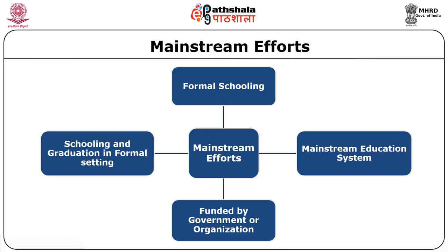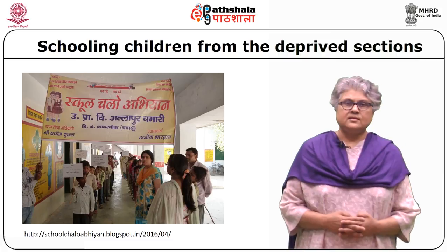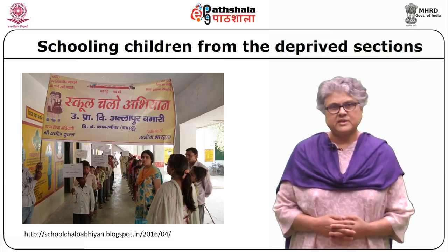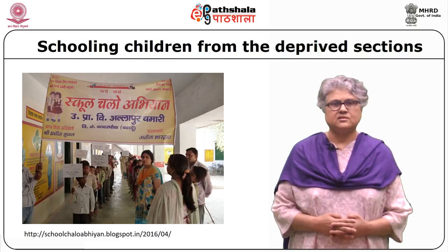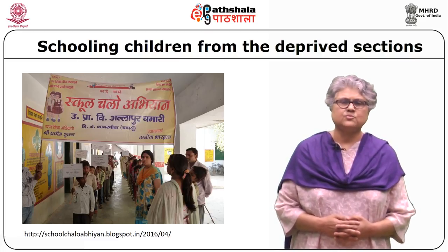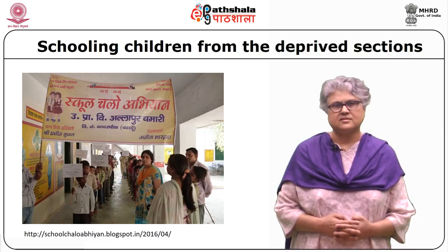There are often children who cannot enter the formal stream for various reasons and therefore remain out of school. The efforts to reach those children take into account their specific situations — why they have been out of school, why they could not enter school — and therefore there are alternate classes for them. These alternate educational initiatives are planned to suit specific situations, and when we come to each initiative, we shall look at what specific situations warranted the setting up of separate schools or classes.